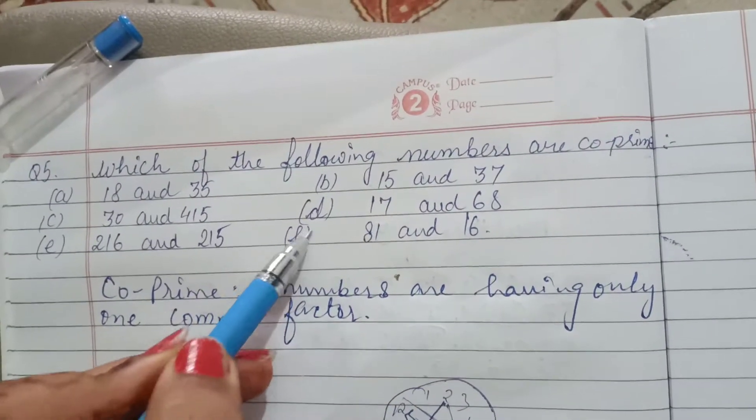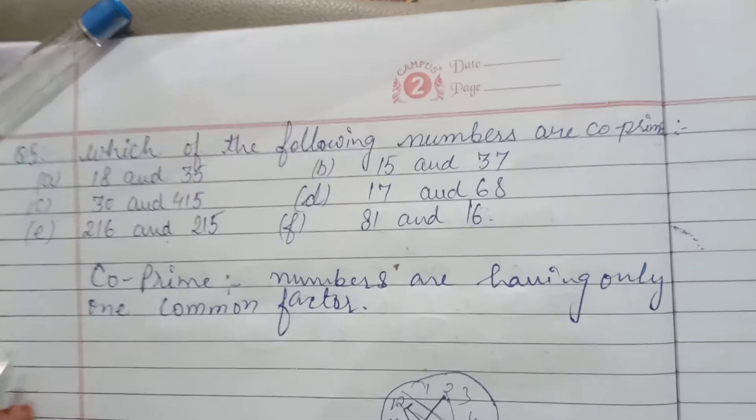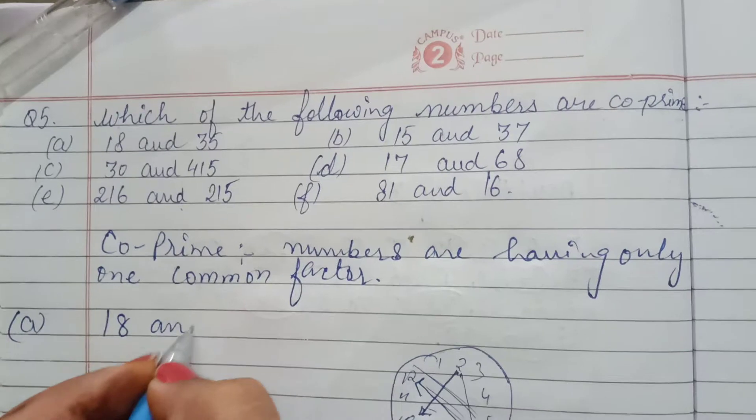Here, up to F part, different parts are given. I just solve one part. A part is 18 and 35.